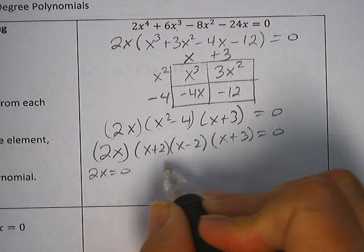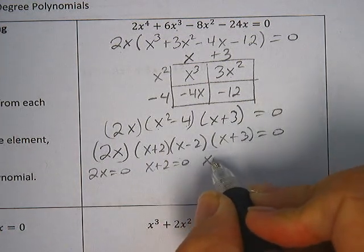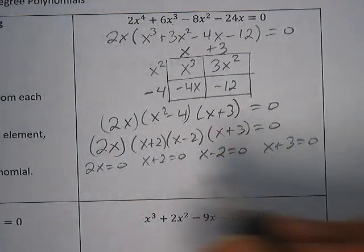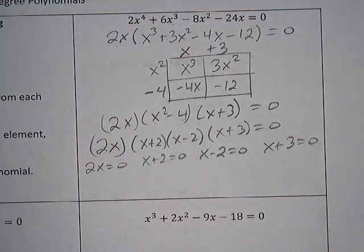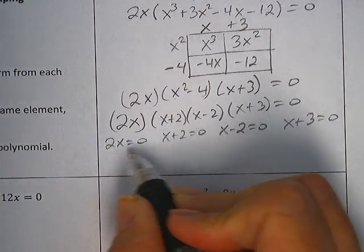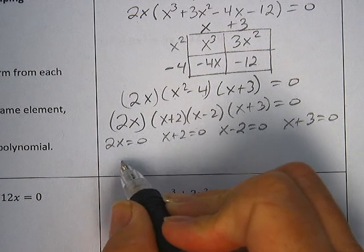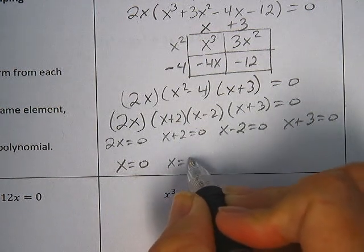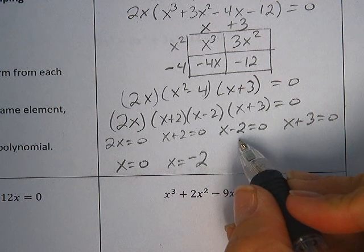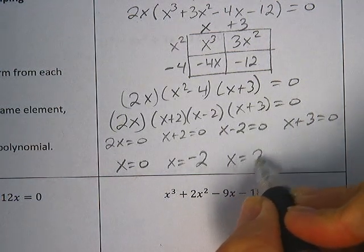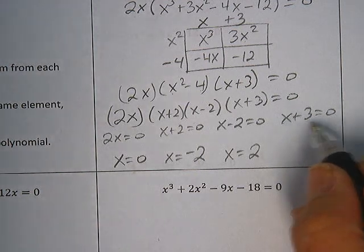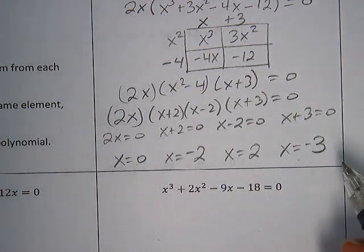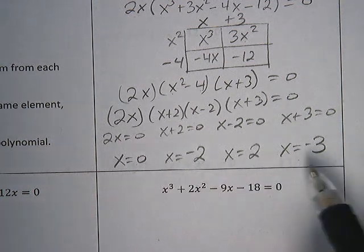So 2x equals zero, x plus 2 equals zero, x minus 2 equals zero, and x plus 3 equals zero. Each one of these four equations I'm now going to solve for x, and my results will tell me what my x-intercepts are, or my solutions. So divide both sides by 2 and I get x equals zero. I subtract the 2 and I have x equals negative 2. If I add 2 on this one, we get x equals 2. And on my final term I subtract the 3 and I get x equals negative 3. These are my four solutions — my four x-intercepts for this equation.